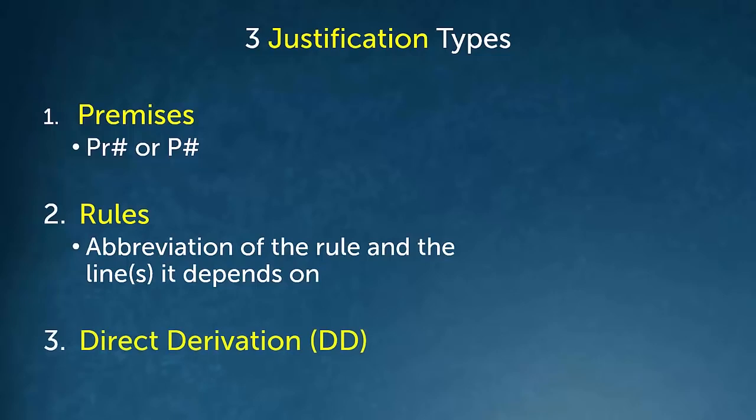The last type of justification we can have is a direct derivation. Direct derivation basically indicates that we've arrived at the conclusion we wanted to prove in the first place. So let's do a couple of examples and see if we can put everything together.